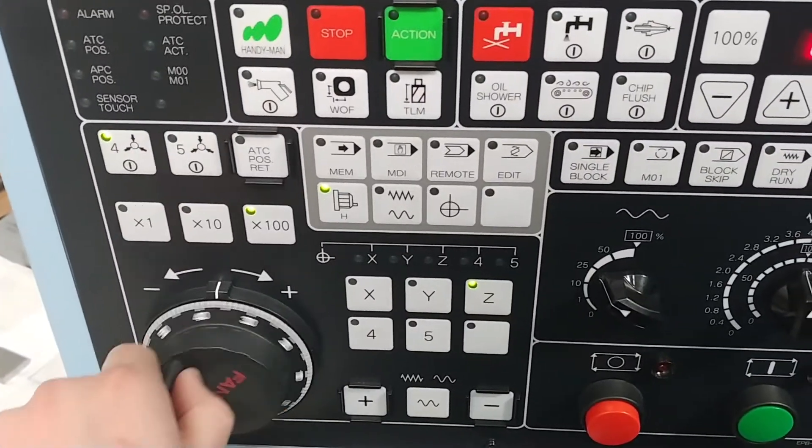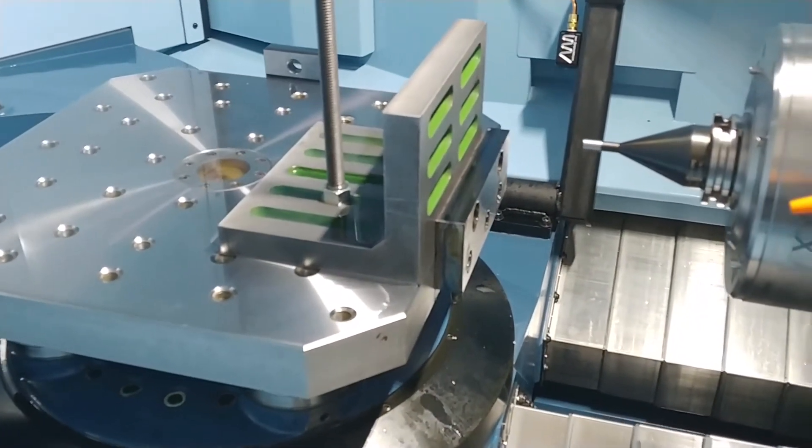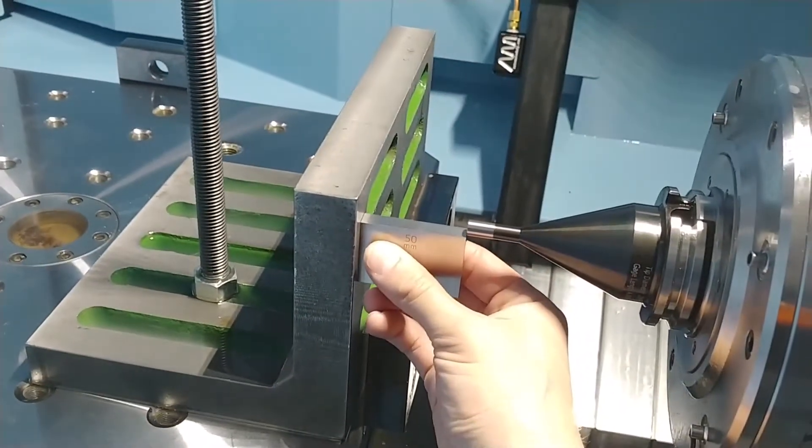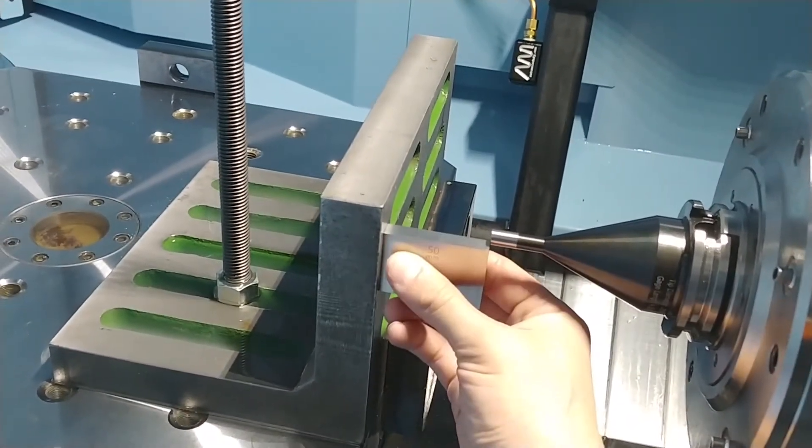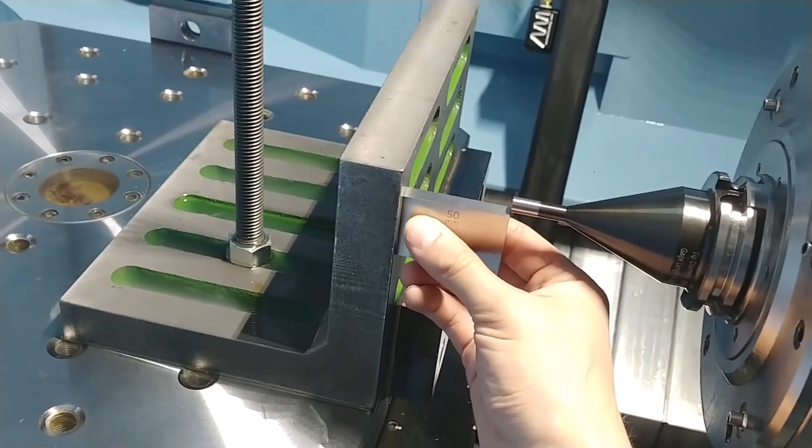You will now touch off the master tool on the table using your gauge block. Jog the master tool down in Z until you are just barely unable to slide the gauge block between the tool and the table.